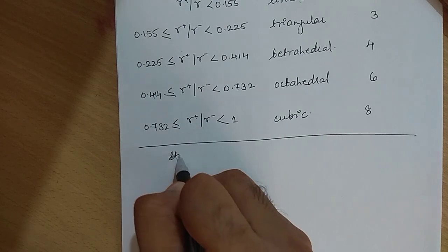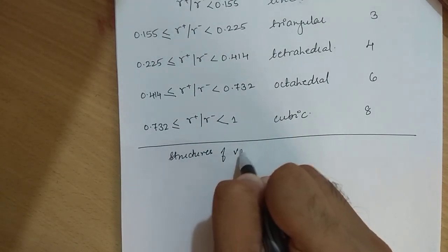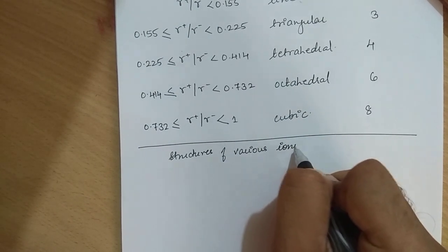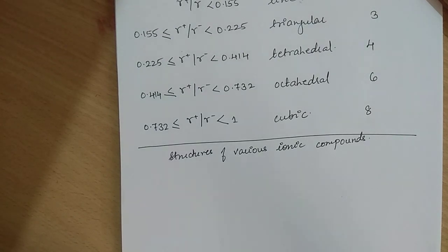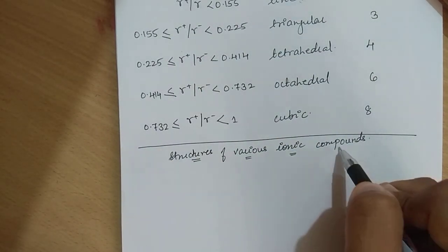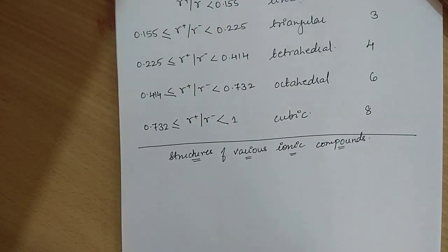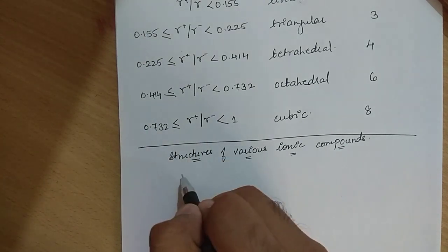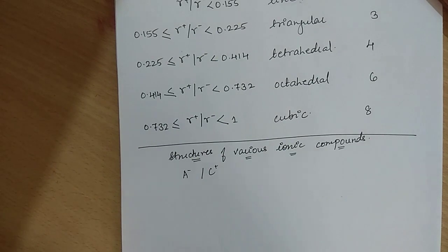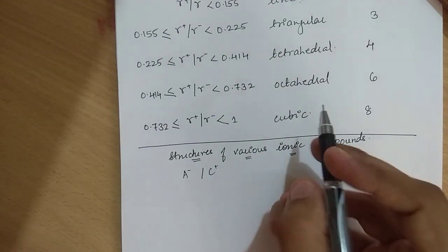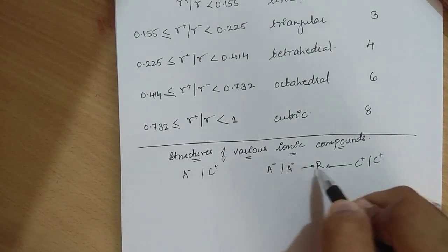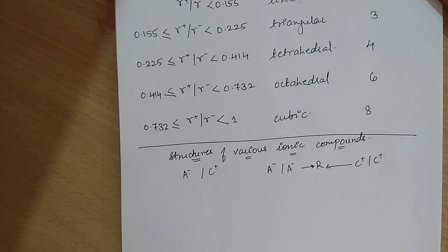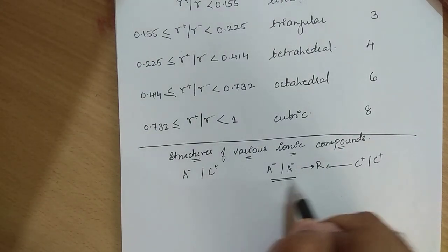Now we will look at structures of various ionic compounds. There are different types of structures such as rock salt structure, fluoride structure, anti-fluoride structure, and zinc blende structure. Ionic compounds are formed from anions and cations. There is a force of attraction between anion and cation because they have opposite charges, but there is repulsion between anion and anion, and also between cation and cation.